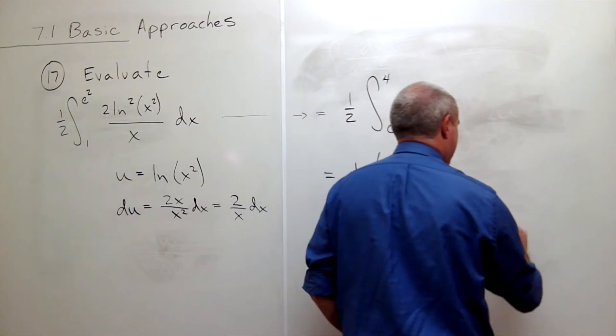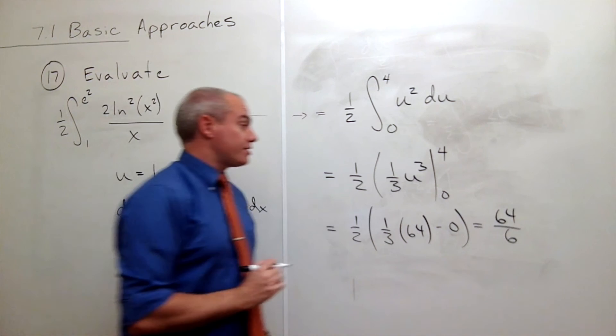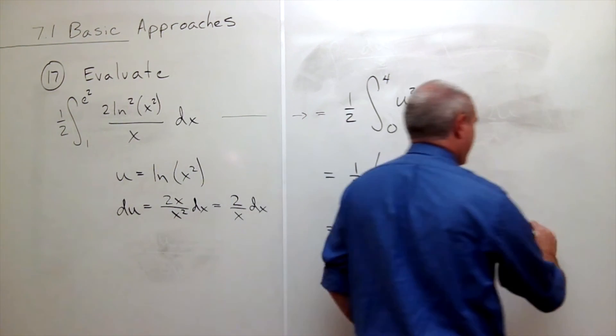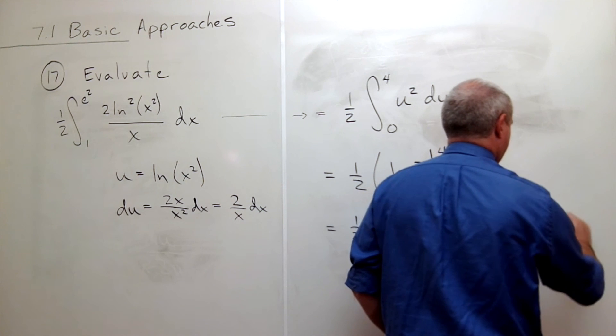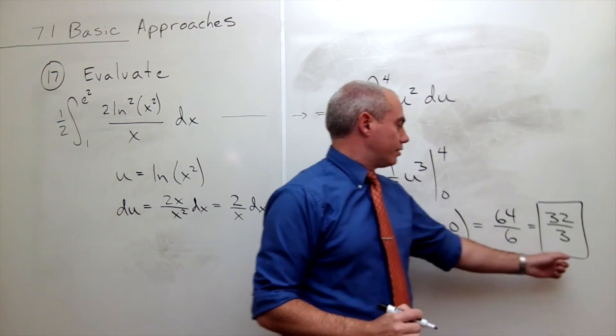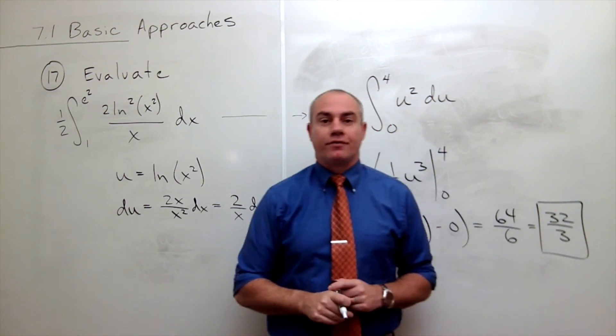And so we end up with 1 half times 1 third times 64. Or that's 64 over 6. I could divide both of those by 2 and I get 32 over 3. And so here is the value of my integral.